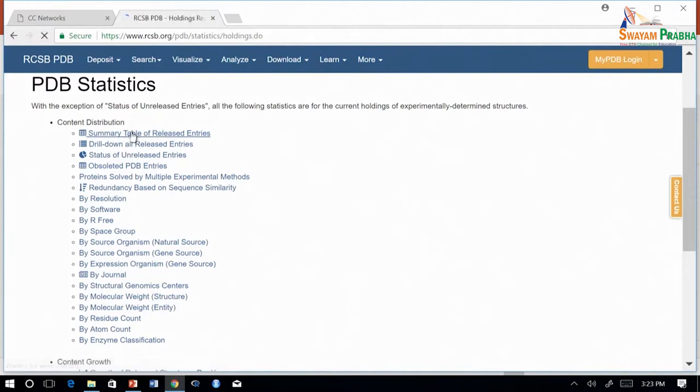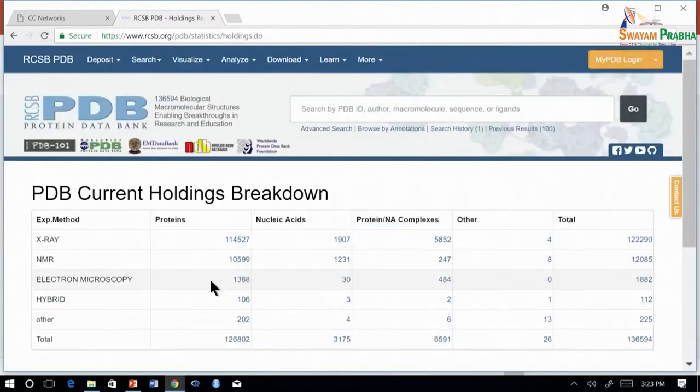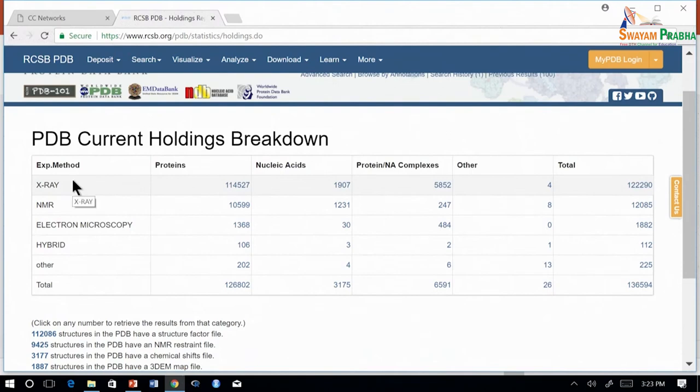The summary table which is displayed here gives the number of structures under proteins, nucleic acids, protein nucleic acid complexes, as well as other biological structures, and also the breakdown by each experimental technique such as x-ray, NMR, or electron microscopy and others. The totals are given here. In total there are currently around 136,000 structures available in PDB.